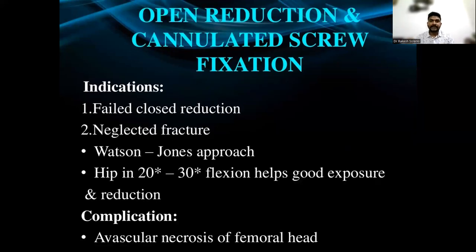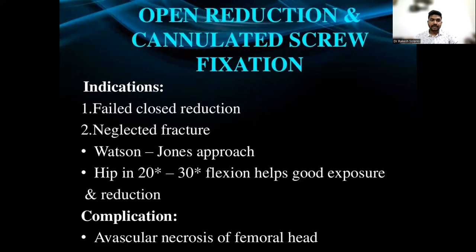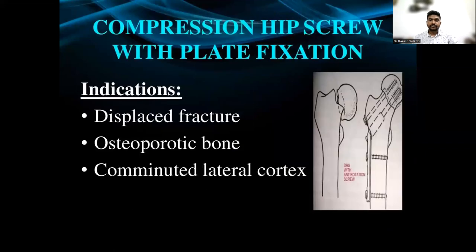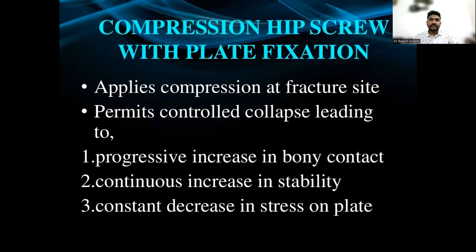Indications for open reduction include failed closed reduction or a neglected fracture. When to go for DHS — dynamic hip screw fixation: if the fracture is displaced, the patient has osteoporotic bone, or there is comminution of the lateral cortex of the neck, then DHS fixation is indicated. The DHS applies compression at the fracture site, permits controlled collapse leading to progressive increase in bony contact, continuous increase in stability, and constant decrease in stress on the plate. The patient can be mobilized immediately if fixation is good.